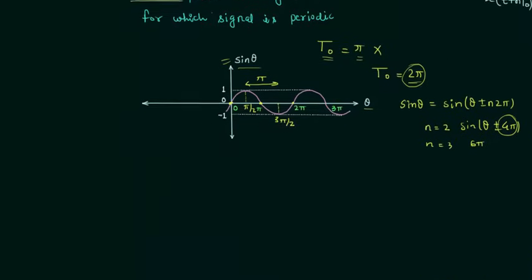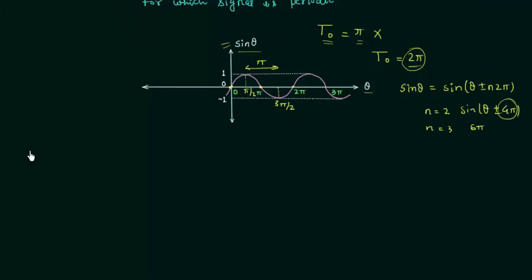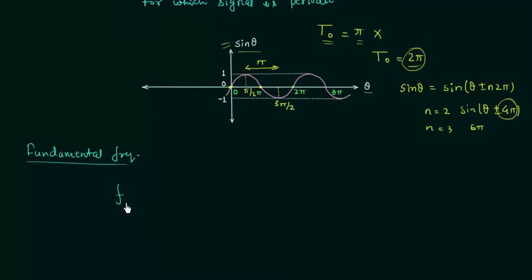The next thing is fundamental frequency. In problems you have to calculate the fundamental time period as well as the fundamental frequency. Fundamental frequency is denoted by F0 and it equals 1/T0. If we have the value of T0 we can easily calculate F0. The unit is cycles per second, or simply Hz.